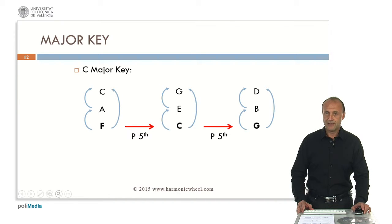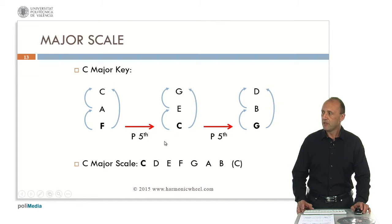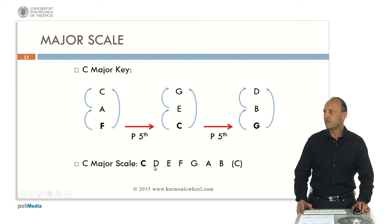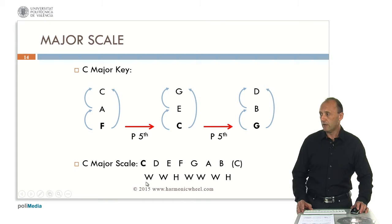With these notes — apparently they are nine, but two of them are repeated, so they are in fact seven notes — we have the C major key, C because we started with note C. If we sort out these notes by the pitch, we obtain the corresponding C major scale, whose notes are C, D, E, F, G, A, B and again C. The distances between these notes are shown below: W for whole step and H for half step.